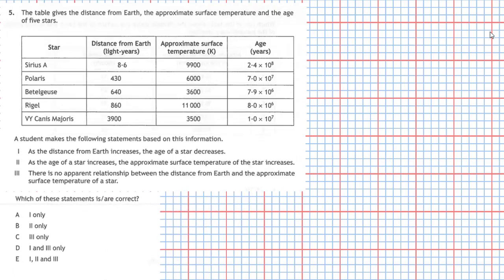Question 5 from section 1 of the 2019 National 5 Physics examination. The table gives the distance from Earth, the approximate surface temperature, and the age of five stars: Sirius A, Polaris, Betelgeuse, Rigel, and VY Canis Majoris. A student makes three statements based on this information and we're asked which of these statements is or are correct.